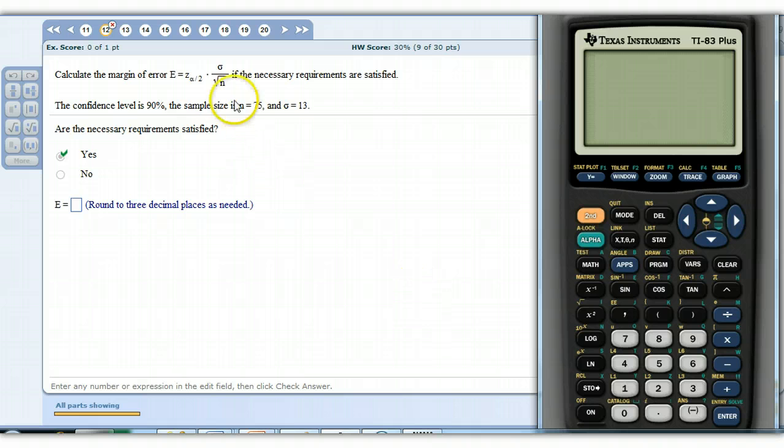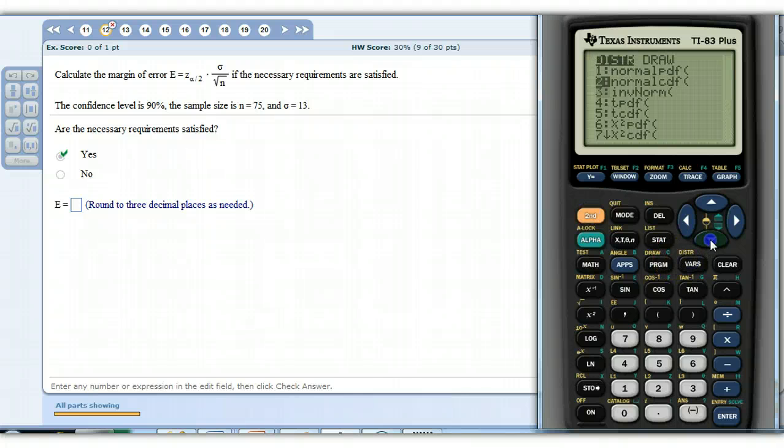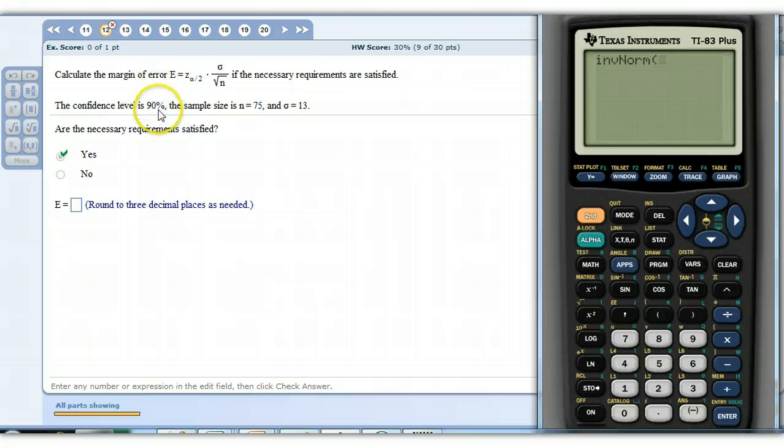To find it, first we need to find out what this z-alpha over 2 is. Now remember inverse norm does z-alpha. So we come down here we select inverse norm again. Why is it inverse norm? Because we're given an area or percentage and we're trying to find a z-score.